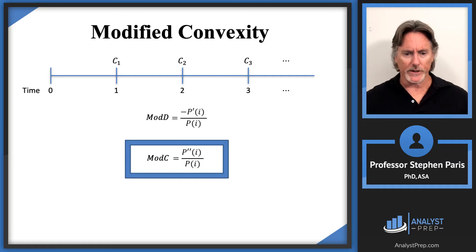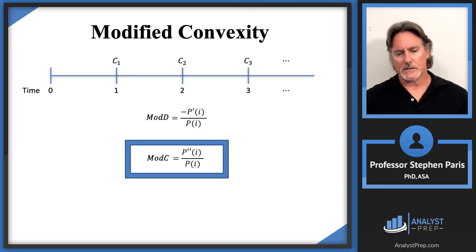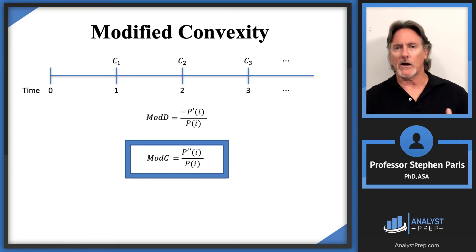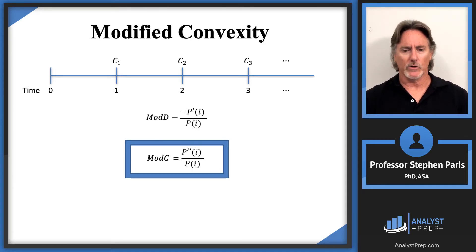Commit those definitions to memory. I don't think the calculations will be very difficult. You're not going to see problems with too many payments — for instance, you won't see something like calculate the Macaulay convexity of a 20-year bond with annual coupons. It might be a three-year bond at most, maybe a four-year bond with annual coupons — so four payments at most, a very short number of payments.